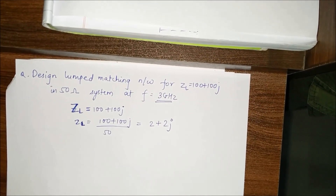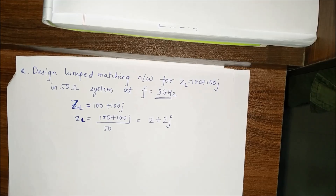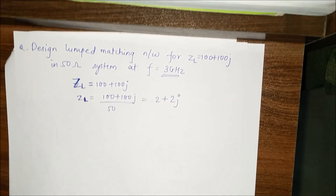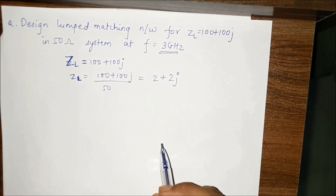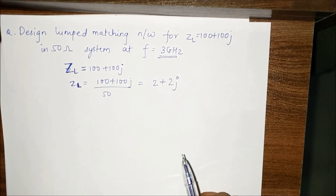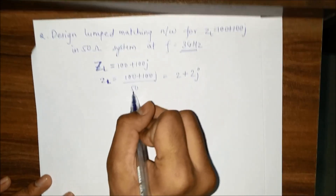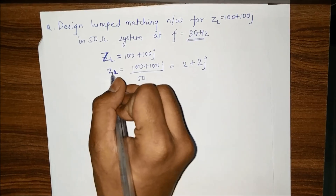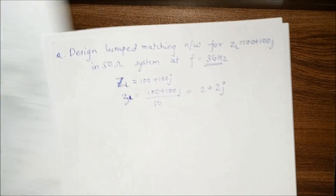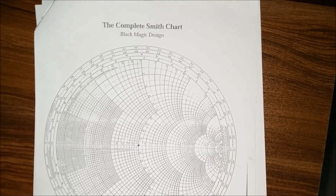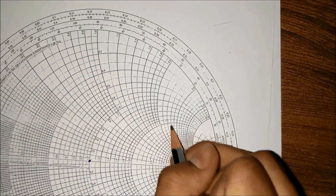Now we consider a problem. One important point to remember: in lump matching networks, frequency will always be given. If it is not given, consider it as one gigahertz. The problem is: design a lump matching network for load impedance 100 + 100j in a 50-ohm system at 3 GHz frequency. We have the load impedance and the characteristic impedance. We calculate the normalized impedance, which is small zL = 2 + 2j.